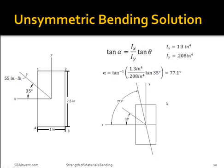Finally, I need to solve for the orientation of the neutral axis. To do so, I would use the equation tan(alpha) equals the area moment of inertia across the x-axis over the area moment of inertia across the y-axis, times the tangent of theta. So alpha would equal the inverse tan of 1.3 divided by 0.208, times tan of 35 degrees, which equals 77.1 degrees. The neutral axis is therefore 77.1 degrees oriented off the x-axis.